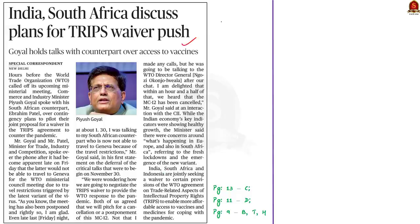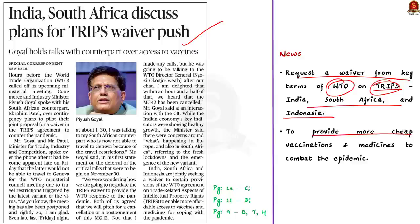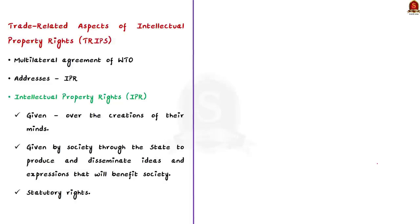This next news article is about India, South Africa, and Indonesia requesting a waiver from the key terms of WTO's agreement TRIPS. WTO is the World Trade Organization and TRIPS stands for Trade Related Aspects of Intellectual Property Rights. India, South Africa and Indonesia are requesting a waiver to provide cheap vaccinations and medicines to combat the current epidemic. Let us understand the acronym TRIPS. TRIPS is one of the most important, comprehensive and multilateral agreements of the World Trade Organization, and it addresses a wide range of intellectual property rights.